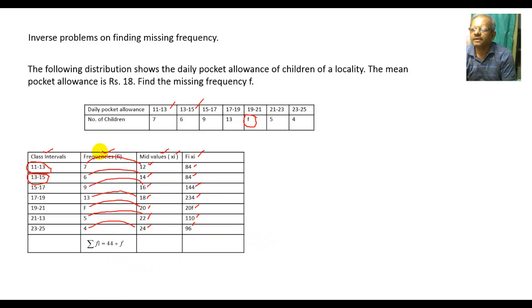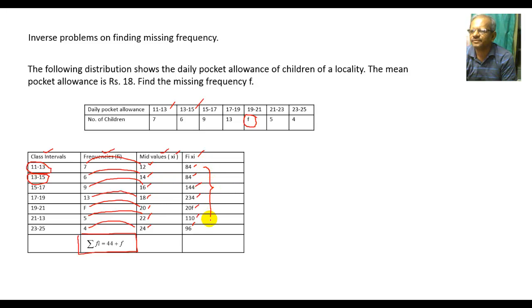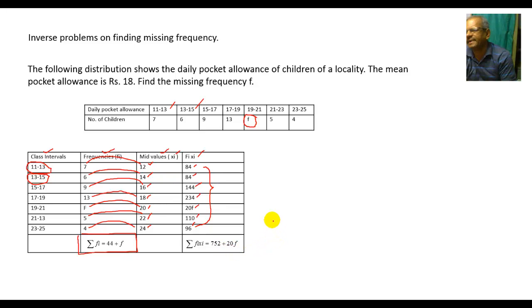The sum of frequencies is 7+6+9+13+f+5+4 = 44+f. Since f is an unlike term it cannot be added to 44, so it remains as 44+f. The summation of fi·xi equals 752+20f.